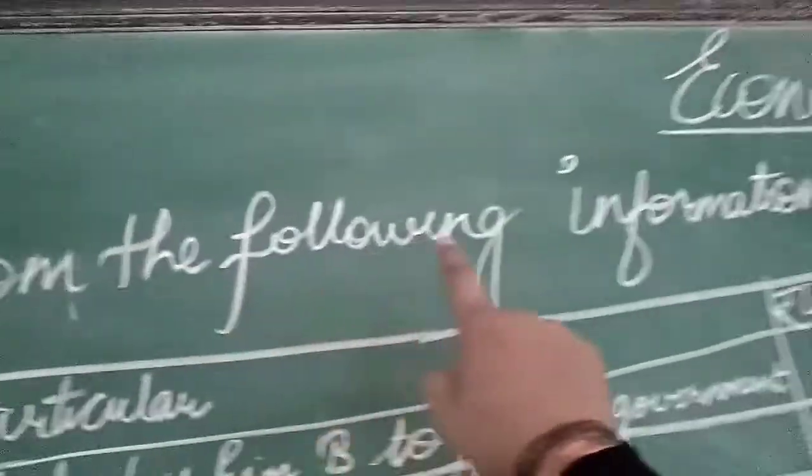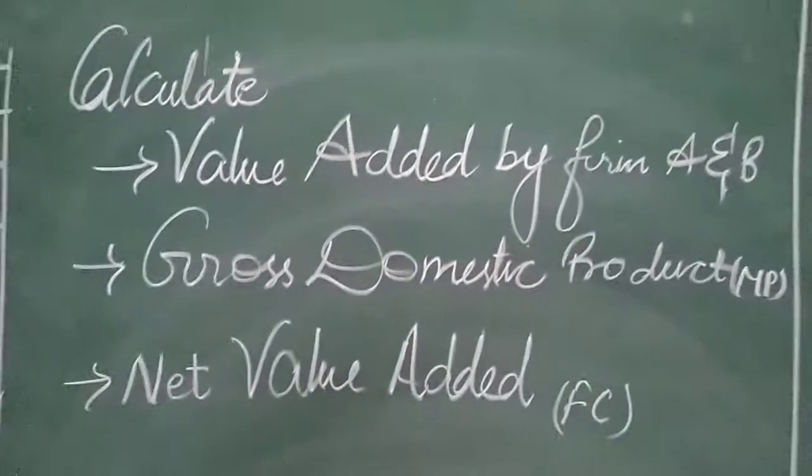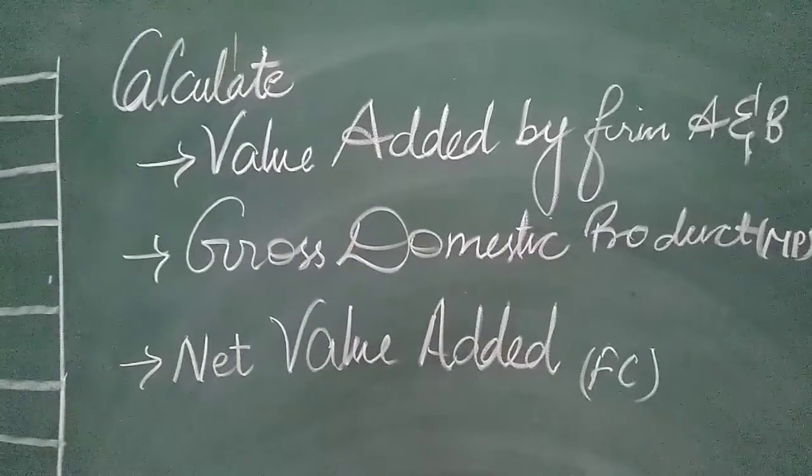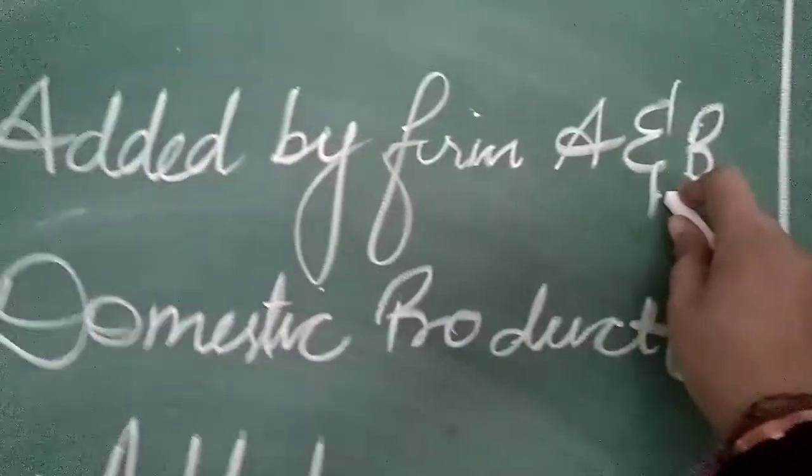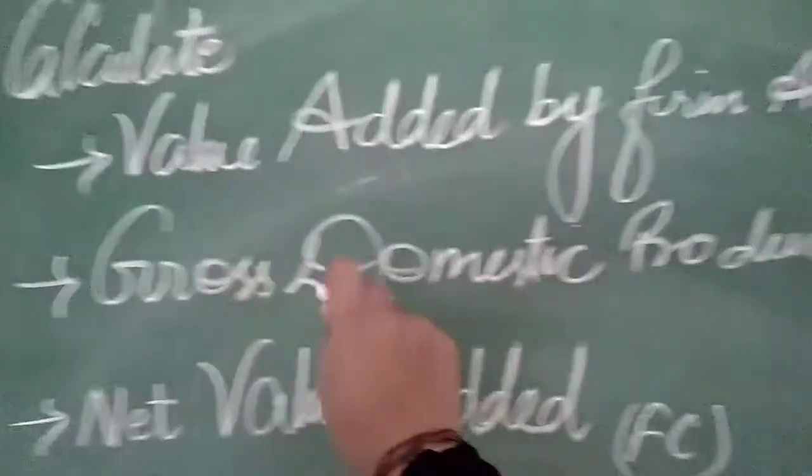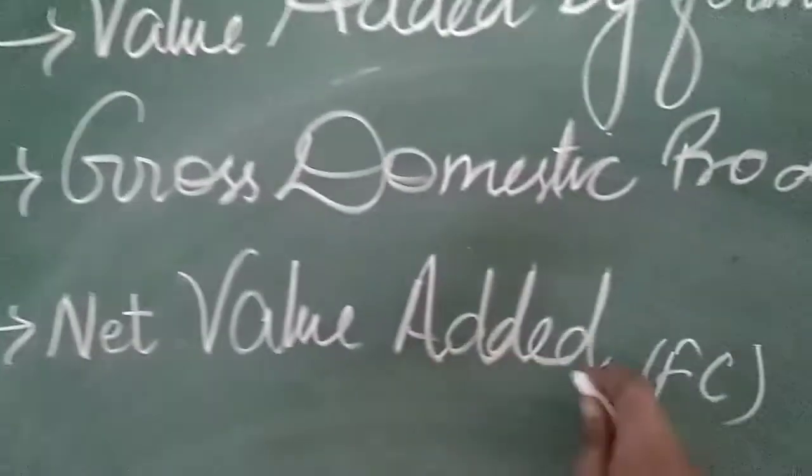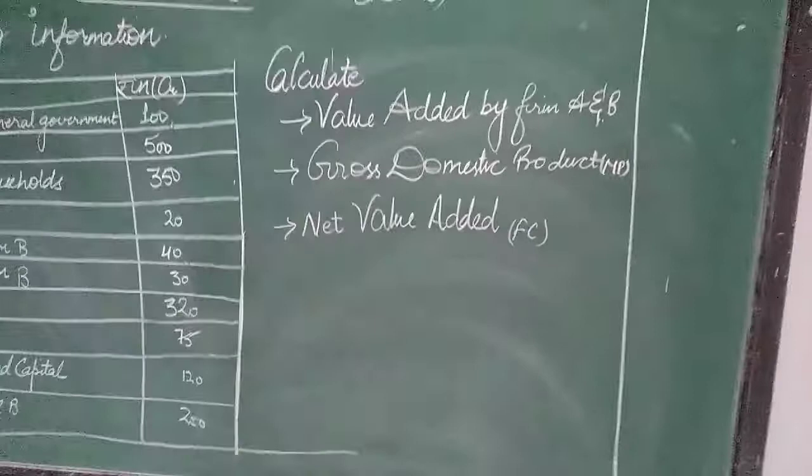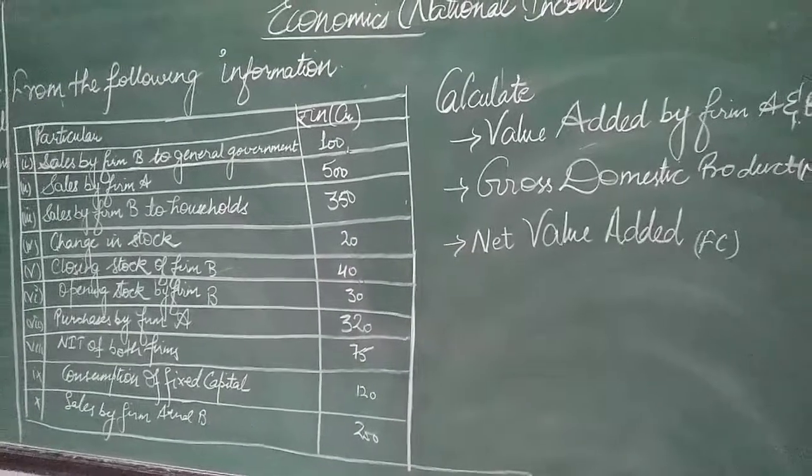Firstly, from the following method or information, you will going to have to calculate these three things. So hereby I am sharing the requirement to be calculated. We have to calculate these three: value added by firm A and B. Firstly, we will add on the contribution of both the firms. Then we will add product to market price. Then we will calculate NVA on FC. In short, we will calculate all the assessments that we have learned.